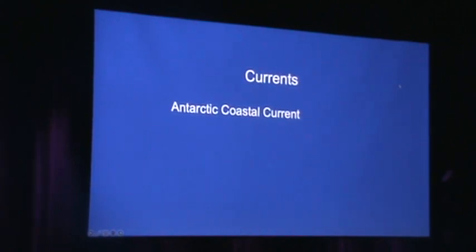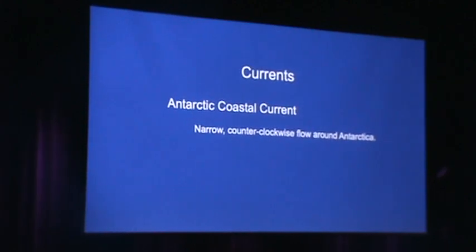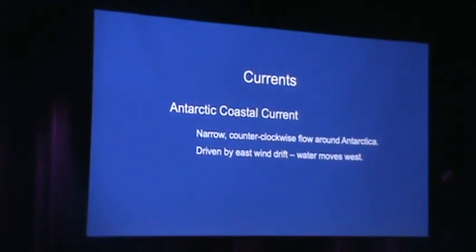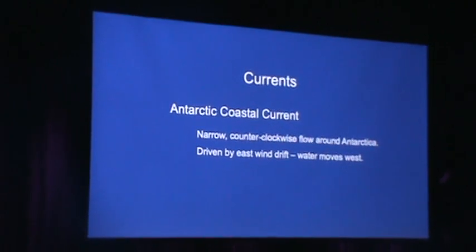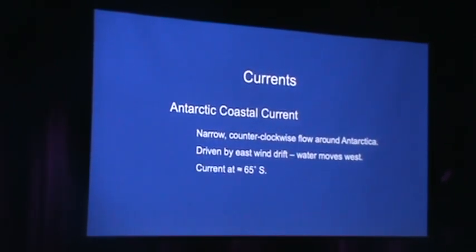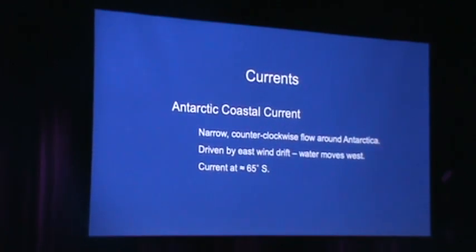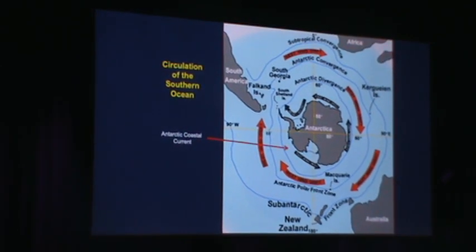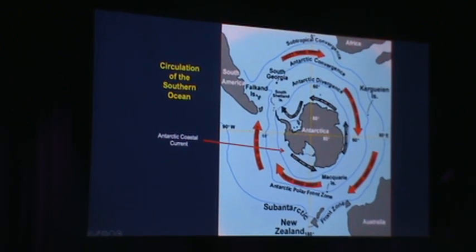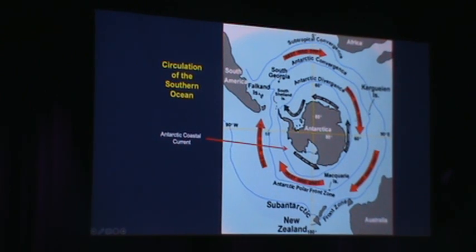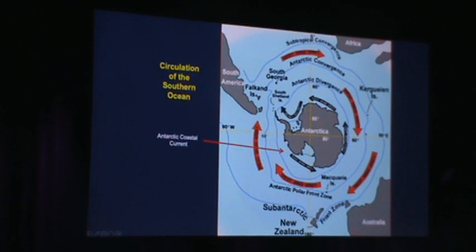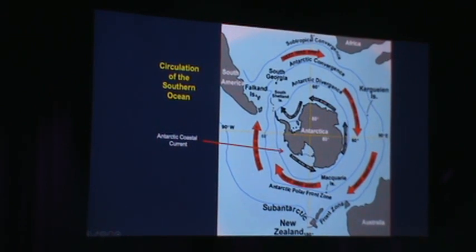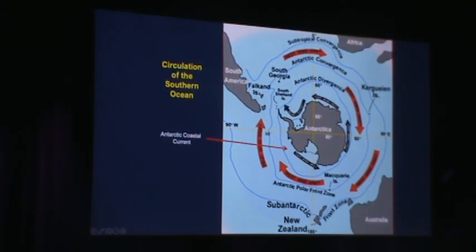Next is the Antarctic Coastal Current. It's very narrow, goes counterclockwise around the Antarctic, and is driven by the east wind drift — the east wind drives everything to the west. It's at approximately 65 degrees south latitude, not quite to the Antarctic Circle. You can see the two currents meeting: the west wind drift going clockwise and the east wind drift going counterclockwise around the continent.